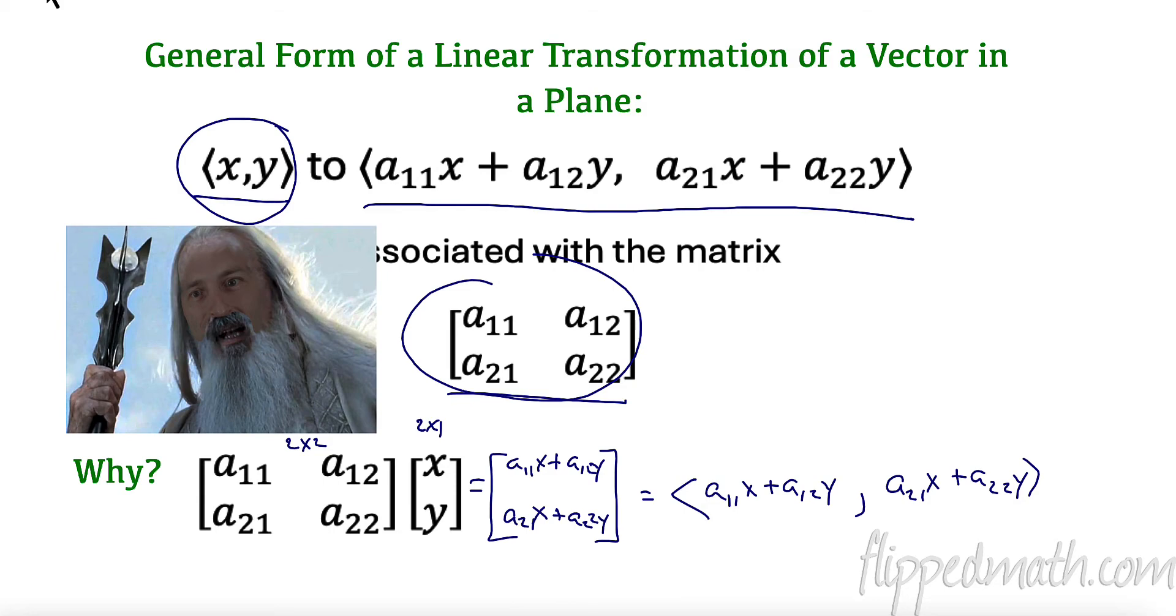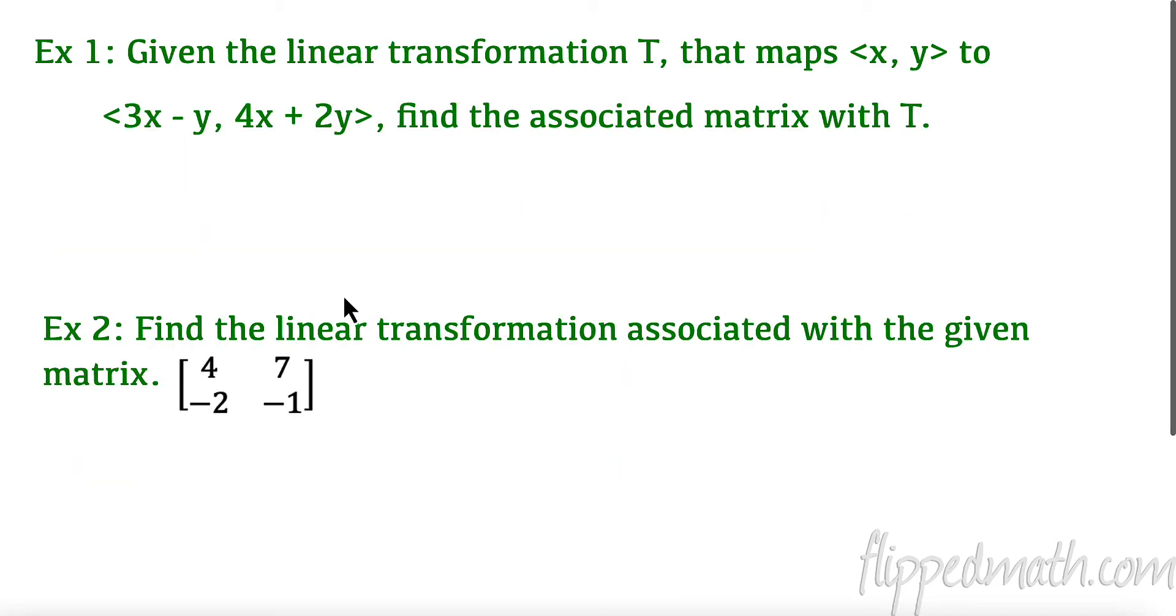So let's take a look at one. Maybe it'll make sense a little bit more if we can look at this. So given the transformation t, we have some transformation t and it maps our vector x, y to this new vector. What would be the associated matrix? So what would I have to multiply to get my new x, y, right?